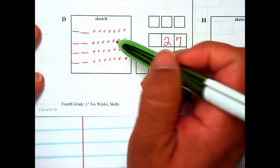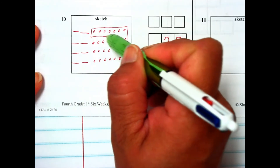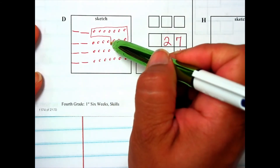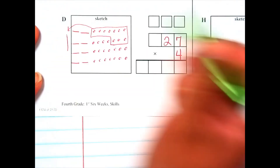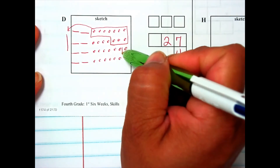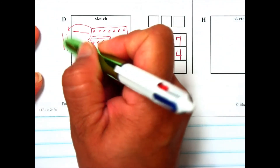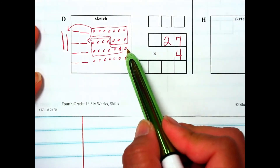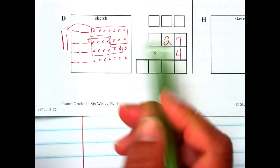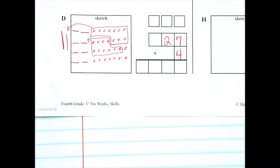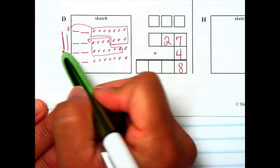Let's do another group: 4 and 6 more is 10. I can regroup this one into 1 ten. 4, 8, 9, 10 — here's another 10. I can bring them over and make another 10. Do I have enough here? 7, 8 — no I do not. So I have 8 ones. I carried over 2 tens.